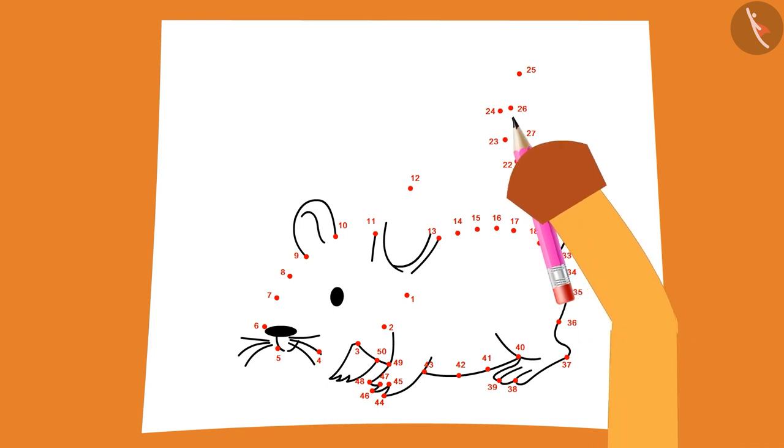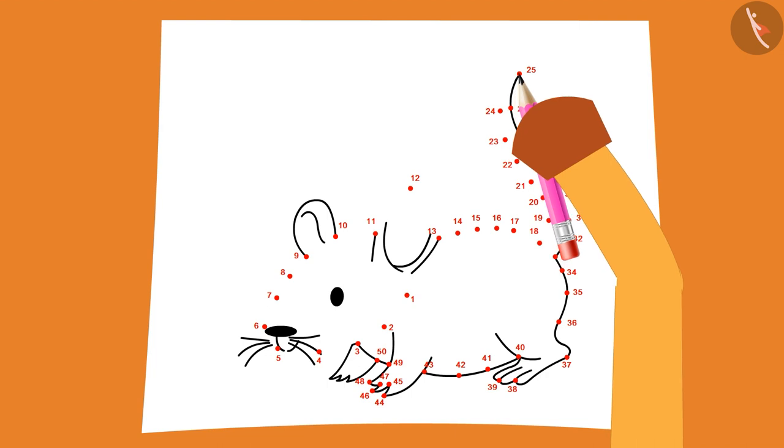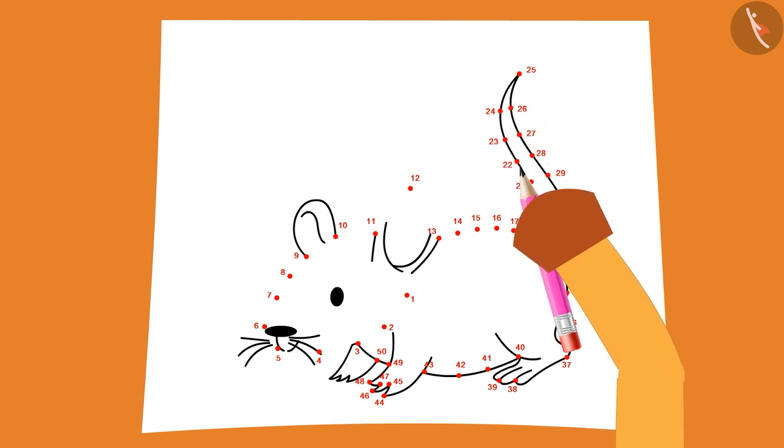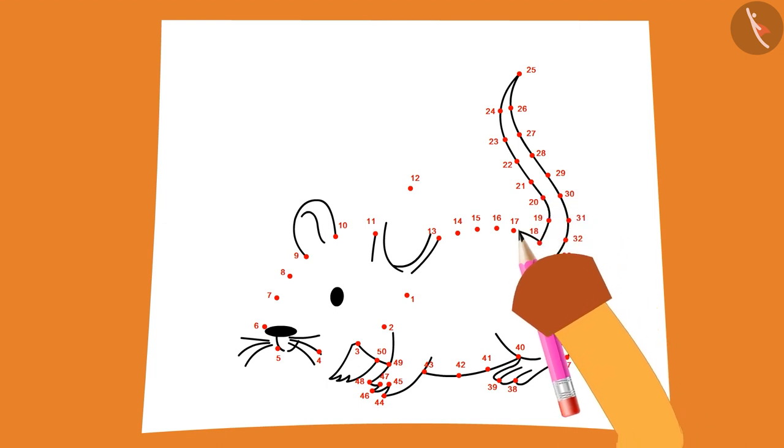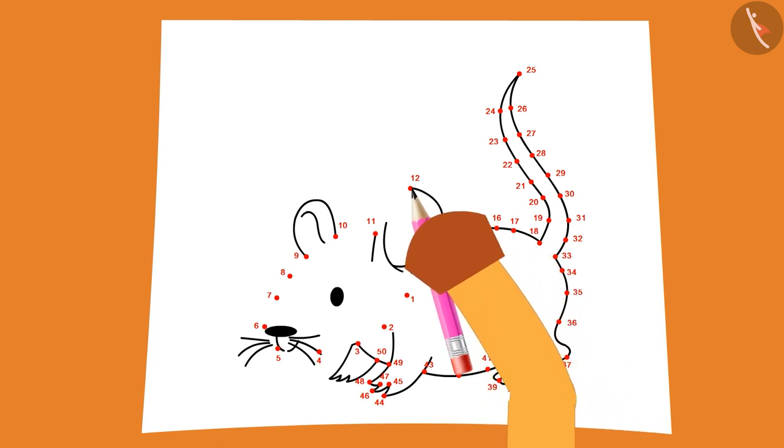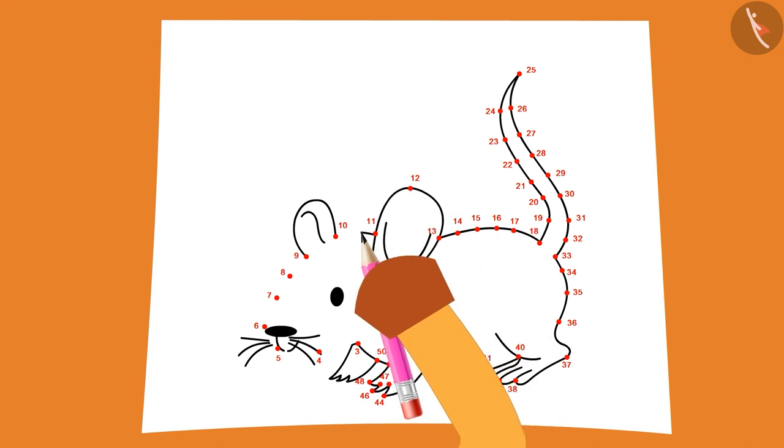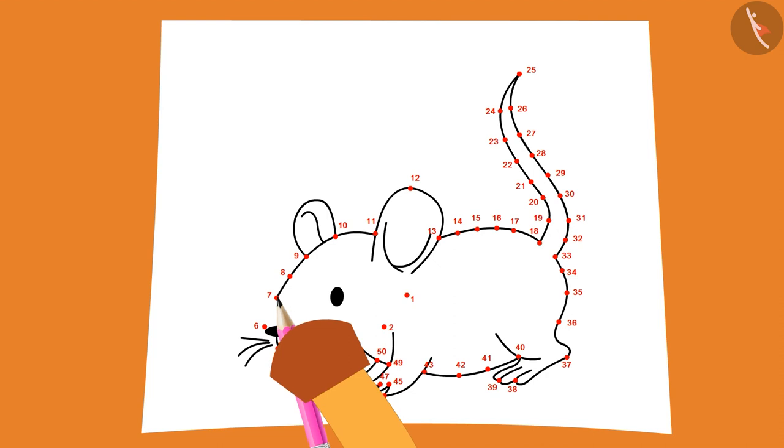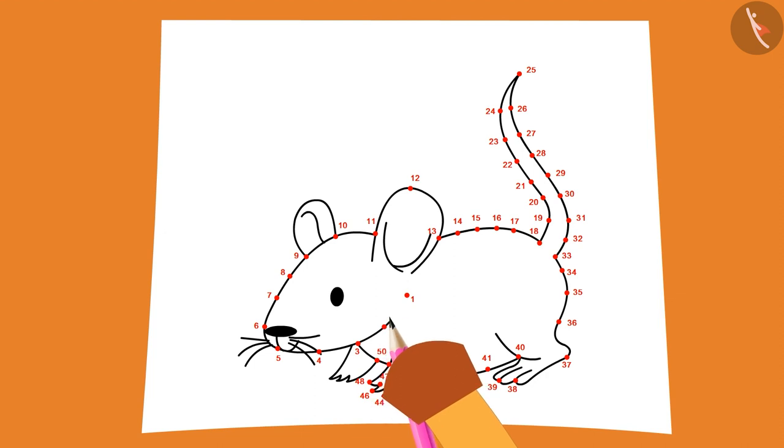29, 28, 27, 26, 25, 24, 23, 22, 21, 20, 19, 18, 17, 16, 15, 14, 13, 12, 11, 10, 9, 8, 7, 6, 5, 4, 3, 2, 1.